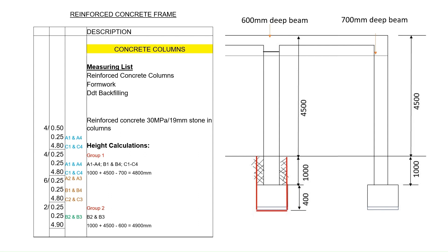The description reads: reinforced concrete 30 MPa / 19 millimeter stone in columns. We know the sizes of the columns; the one thing we still need to determine is the height. To determine the heights we need to account for the different beam depths. Starting with the perimeter columns — A1 to A4, B1 and B4, C1 to C4 — we take the 5500 millimeter height and deduct the 700 millimeter deep beam, resulting in a height of 4800 millimeters. This is applicable to all perimeter columns.